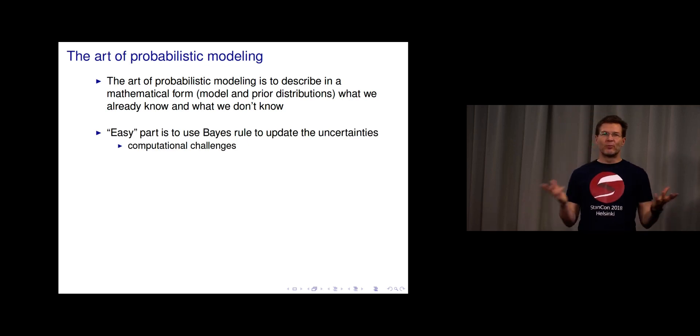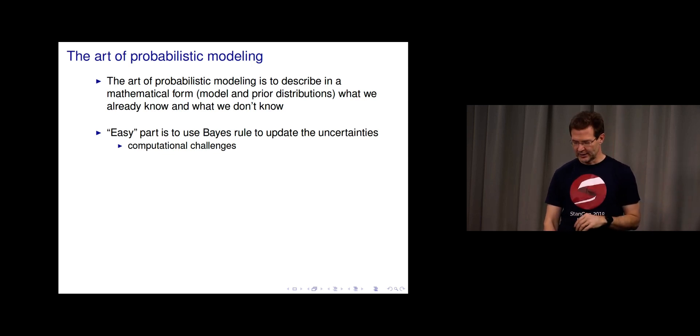After we form these distributions, the easy part is to use Bayes rule to update uncertainties. Easy is in quotations because there's a computational challenge. It's easy to write the mathematical equation for the update, but more difficult to compute something which is useful for making decisions.